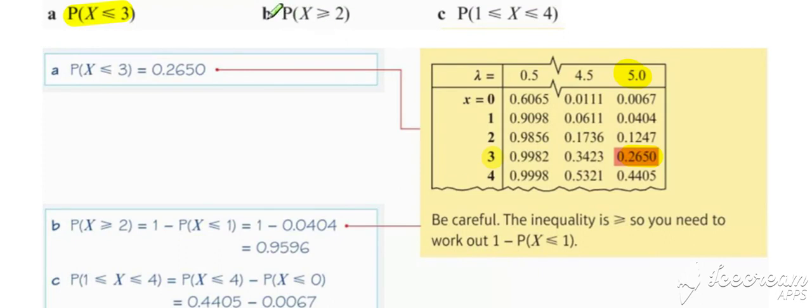If we want the probability that x is greater than or equal to two, not less than or equal to, then we need to rearrange our inequality into something equivalent that involves a less than or equal to statement. We can then look up less than or equal to one from our tables and subtract it away from one.